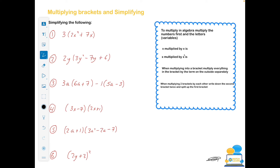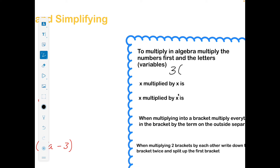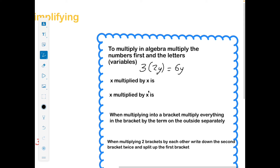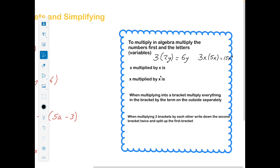For multiplying brackets and simplifying: the second you see a bracket, we want to get rid of it by multiplying. The key rule: to multiply in algebra, multiply the numbers first and then the letters. So 3 multiplied by 2y gives 6y. If I have 3x multiplied by 5x, that's 15 and then x by x is x squared. Key rules: x multiplied by x is x squared, x multiplied by x squared is x cubed — you need to learn those off by heart.